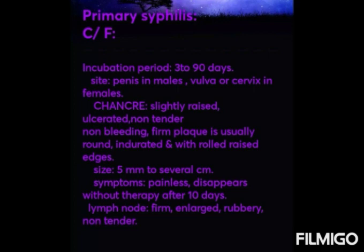Primary syphilis occurs 3 to 90 days after exposure. It occurs most frequently on the penis in males and the vulva or cervix in females. Recently, occurrence on extragenital sites has increased as a result of orogenital sex and increased contact among infected homosexuals. Extragenital sites include fingers, perianal region, nipples, lips, tonsils, and intraoral structures such as tongue and palate.